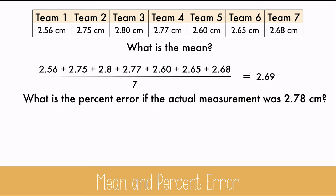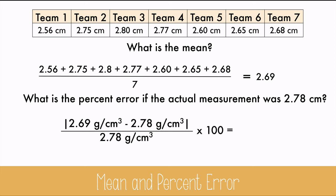What's the percent error if the actual measurement was 2.78 centimeters? We'll take the mean and use it as our experimental value, and 2.78 as the accepted value. Multiply by 100, and you get 3.2 percent, which is okay. But remember, closer to zero is better.